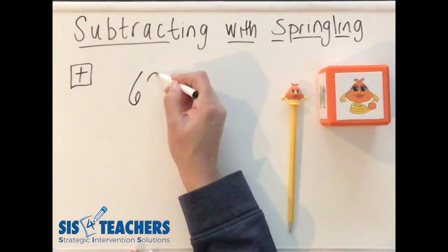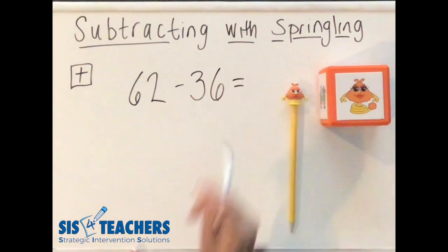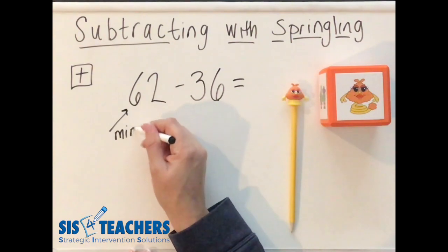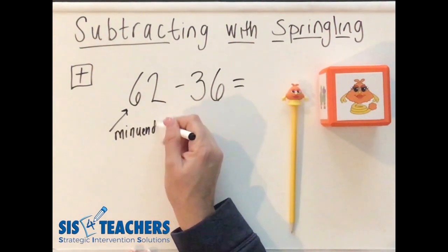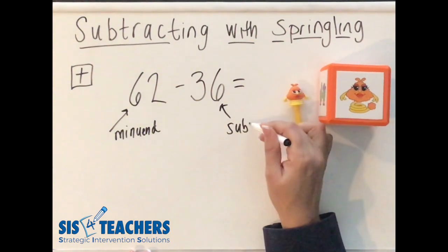Let's check out the way she is going to solve the problem 62 minus 36. When we look at these two numbers, we have the minuend, which is the first number in subtraction. Then we have what's called the subtrahend.